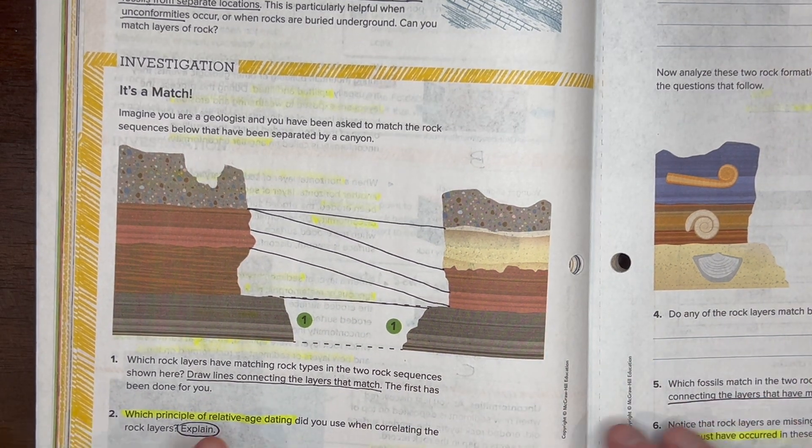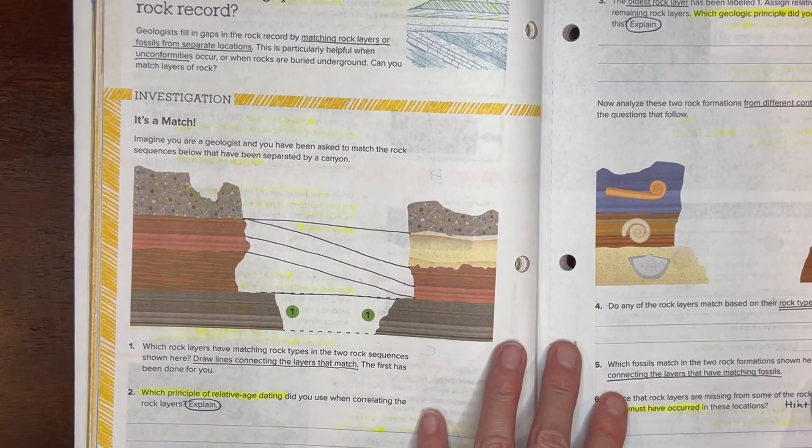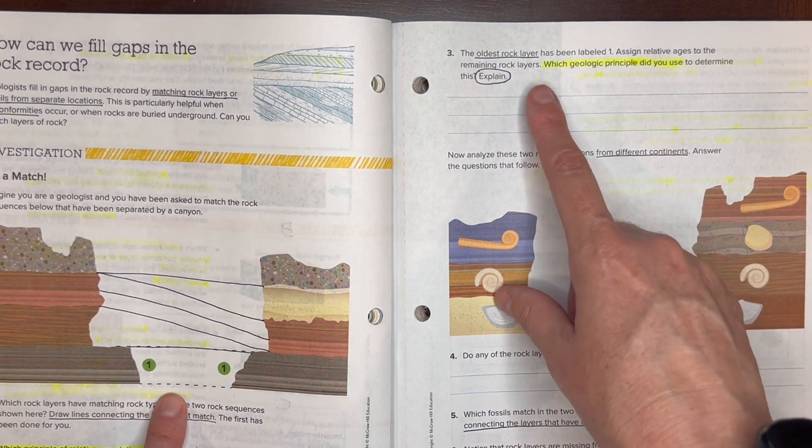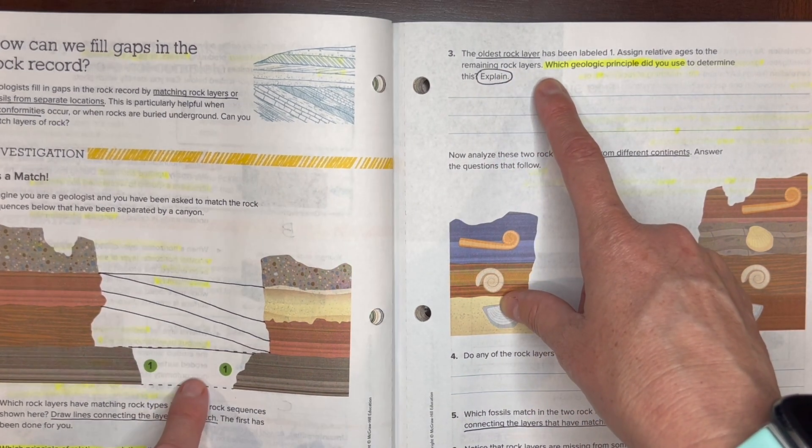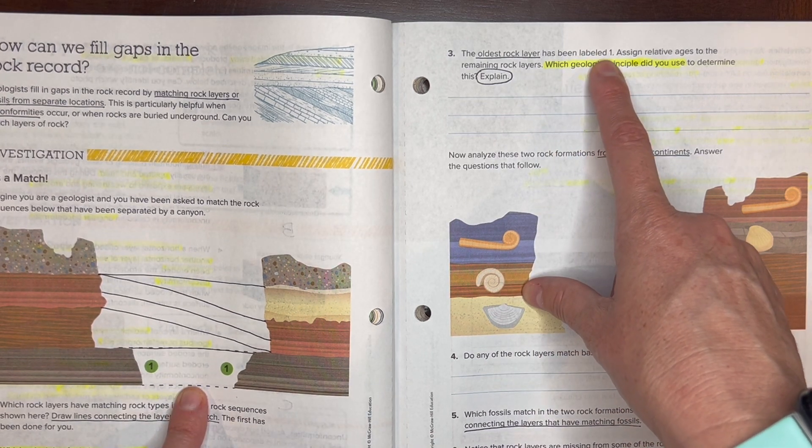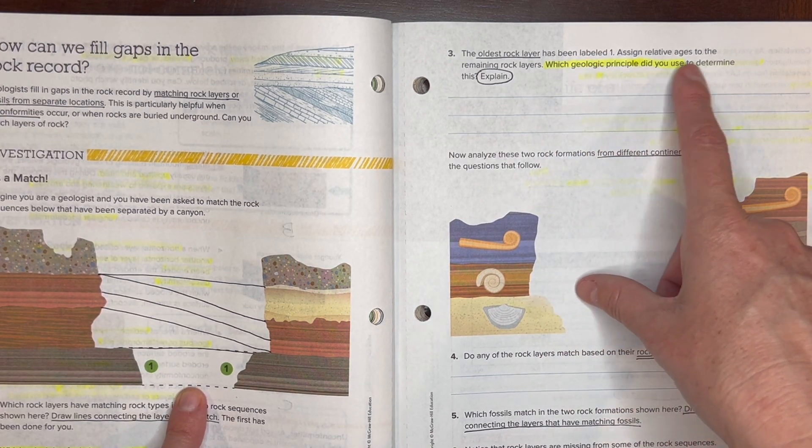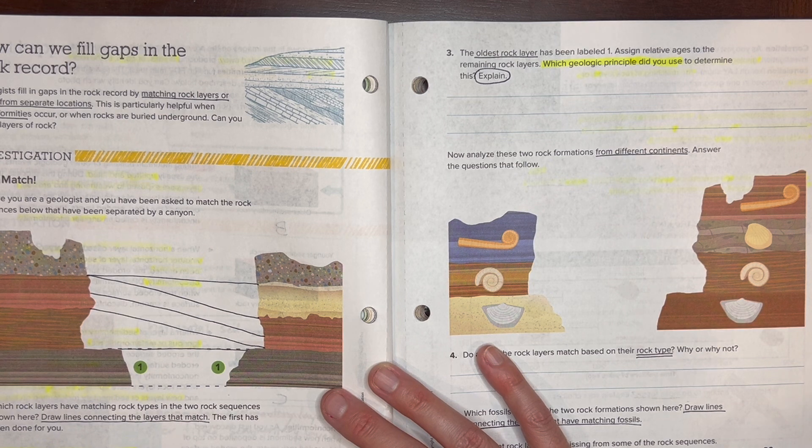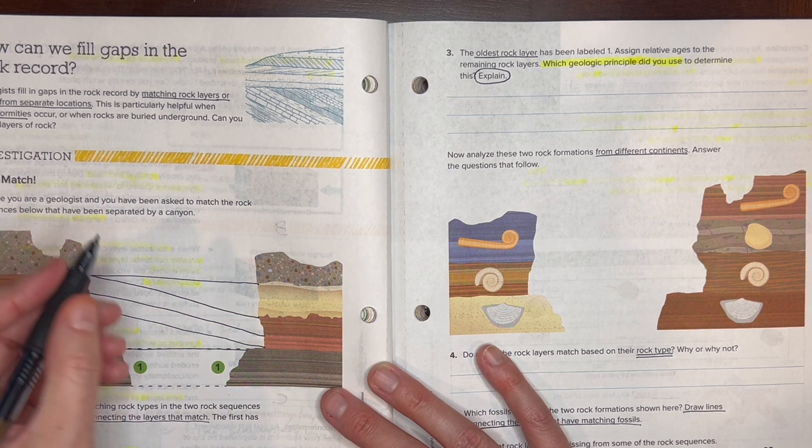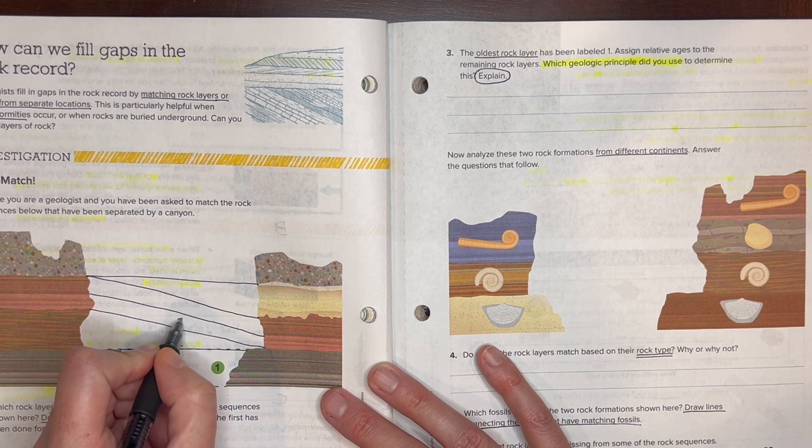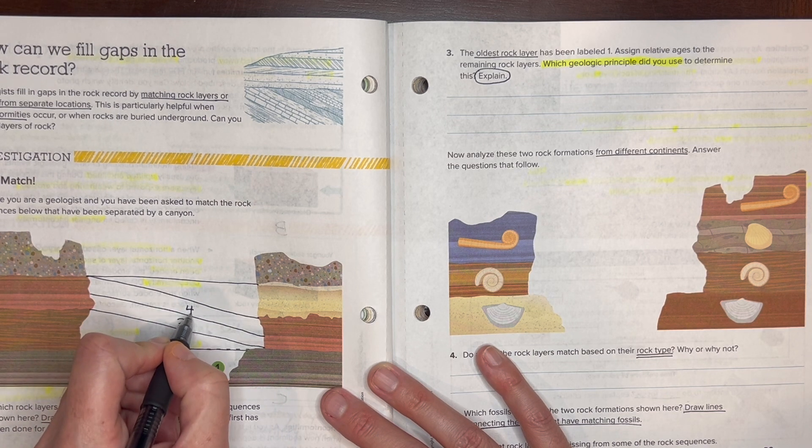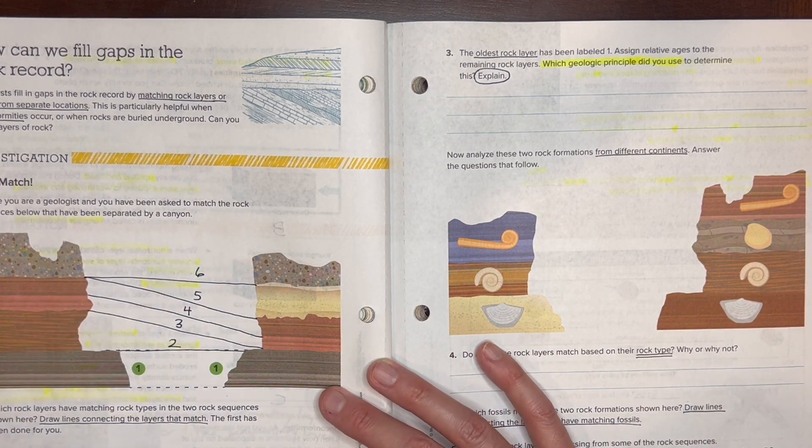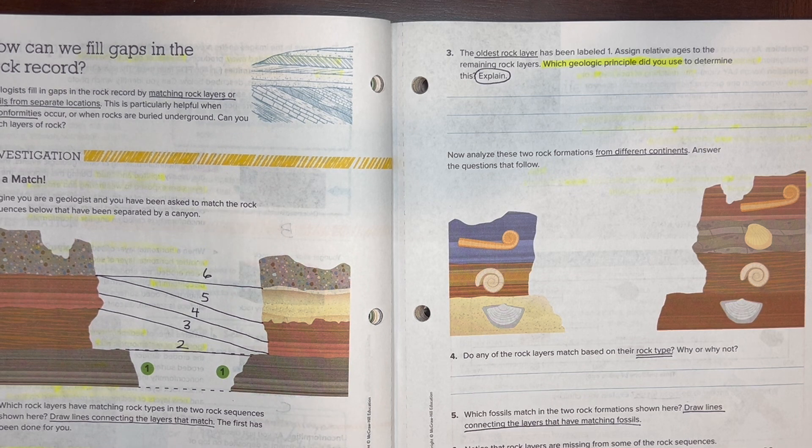Let's look over here on number three. It says the oldest rock layer has been labeled number one because we know that that's at the bottom. They're the oldest, so let's go ahead and number the other ones. After number one, we're going to work our way up. This will be number two right here, then three, four, five, and then of course six.